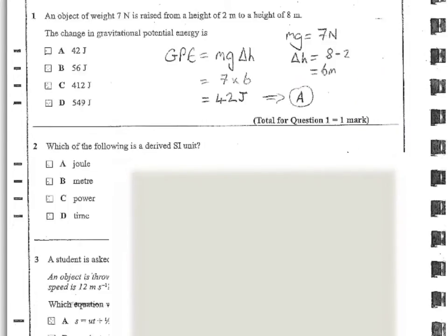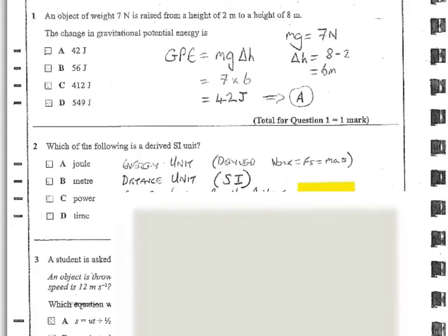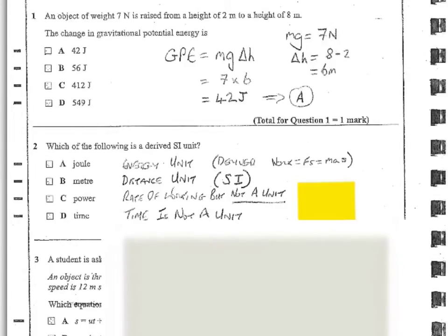Question two. Which of the following is a derived SI unit? So we've got the joule, the meter, power and time. Well, the joule is the energy unit and it is derived because work is force times displacement which is mass times acceleration times displacement. Meter is the distance unit in the SI system. Power is the rate of working but power, the word, is not a unit of anything. And time, the word, is not a unit of anything. So we've got a choice between A and B and B is definitely an SI base unit. So the derived unit here is the joule. Answer A.